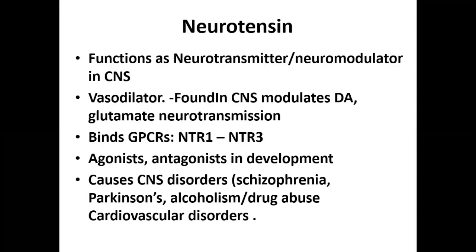Neurotensin functions as a neurotransmitter as well as a neuromodulator in the central nervous system and is also a vasodilator. It modulates dopamine and glutamate neurotransmission. It is available as NTR1, NTR2, and NTR3 subtypes. Agonists and antagonists are currently unavailable. Abnormal secretion of neurotensin can cause CNS disorders including schizophrenia, Parkinson's, and alcoholism, potentially leading to drug abuse and cardiovascular disorders.